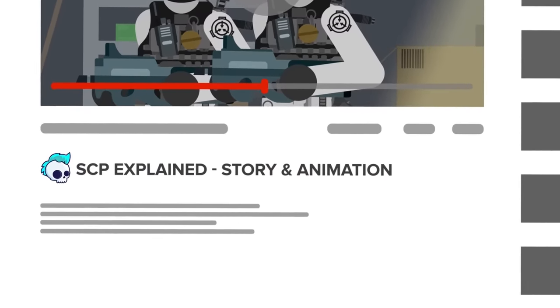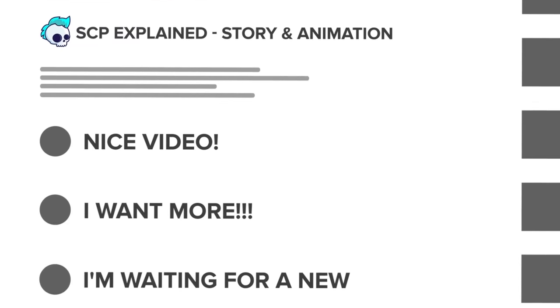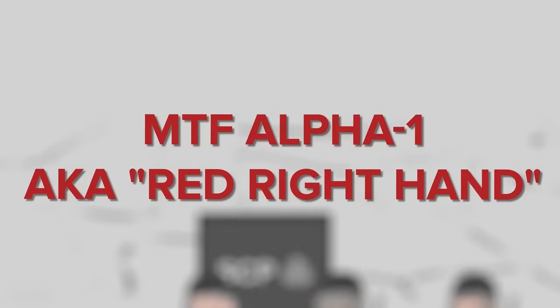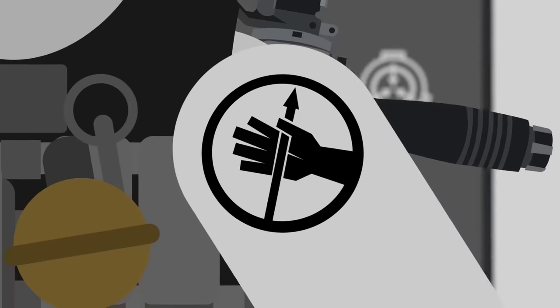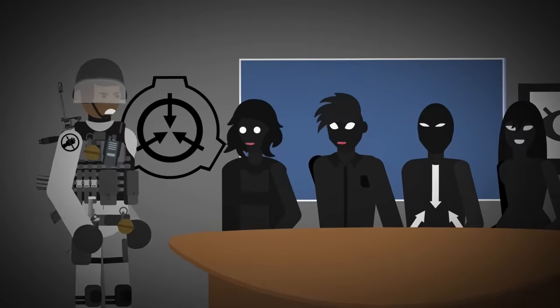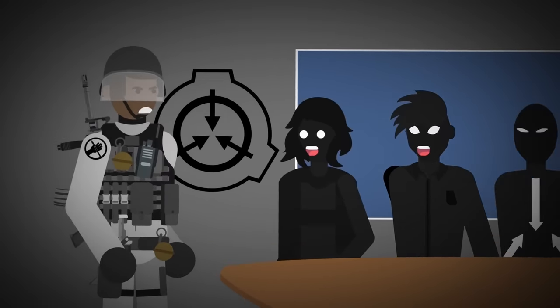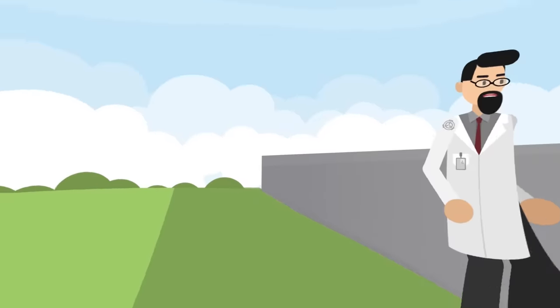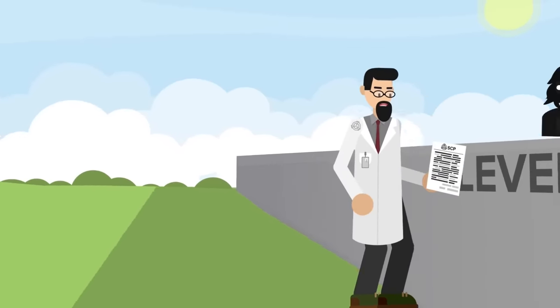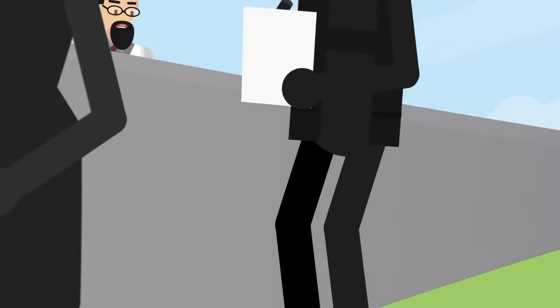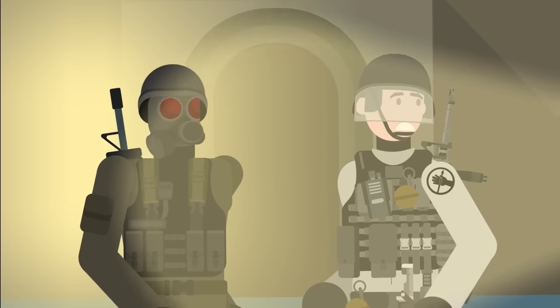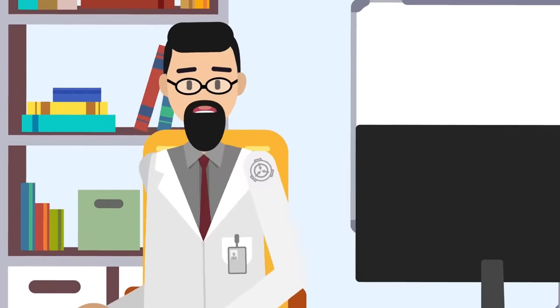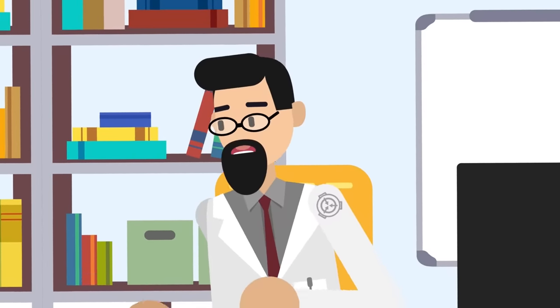But for now it's time for a rundown of the Foundation's best of the best. MTF Alpha-1, aka Red Right Hand, are essentially the black ops of the SCP Foundation. They report directly to the O5 Council and conduct missions at the highest level of secrecy, with most of the information hidden behind a level 5 clearance wall. Many also believe Alpha-1 to have links to the infamous Chaos Insurgency, a splinter group at war with the Foundation. But if anyone asks, you didn't hear it from us. Seriously, we don't want to get assassinated.